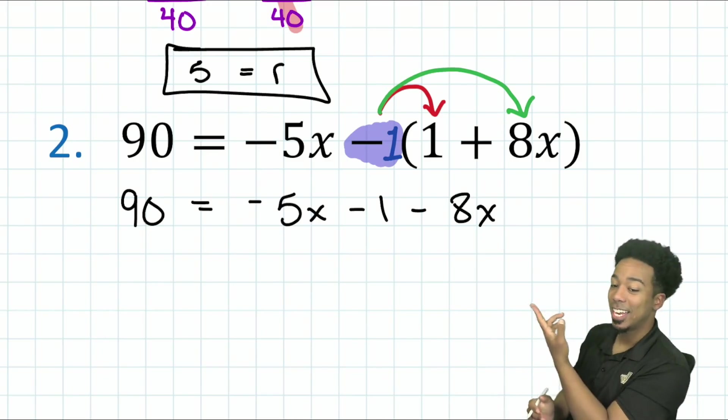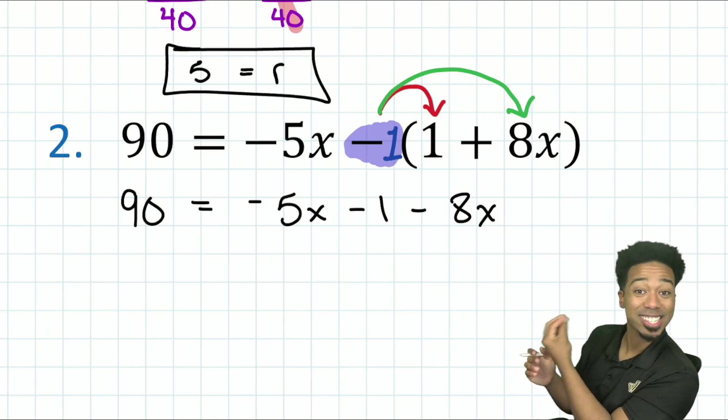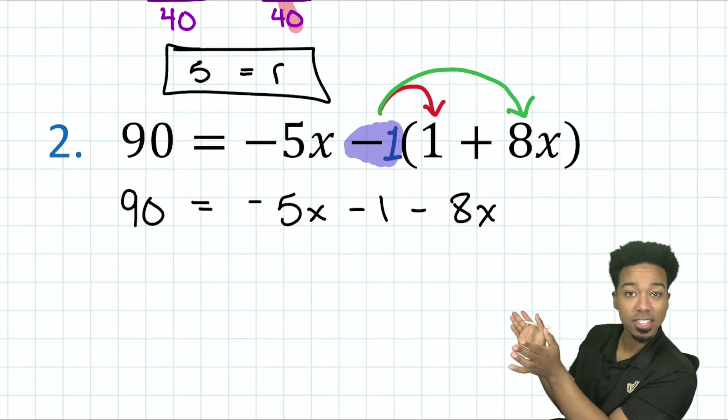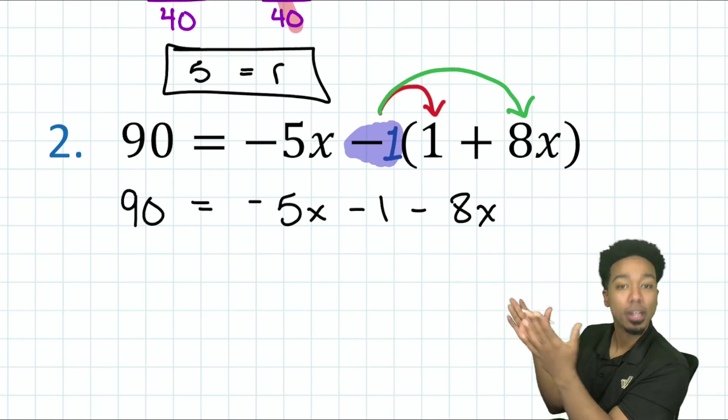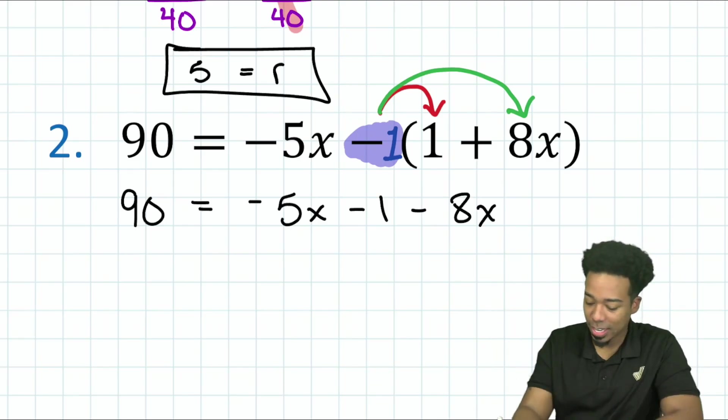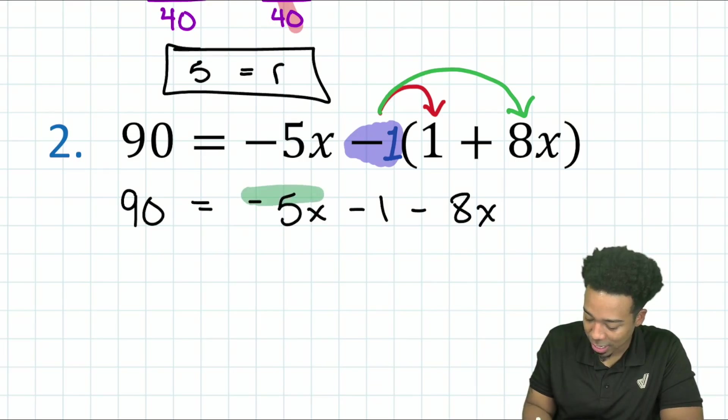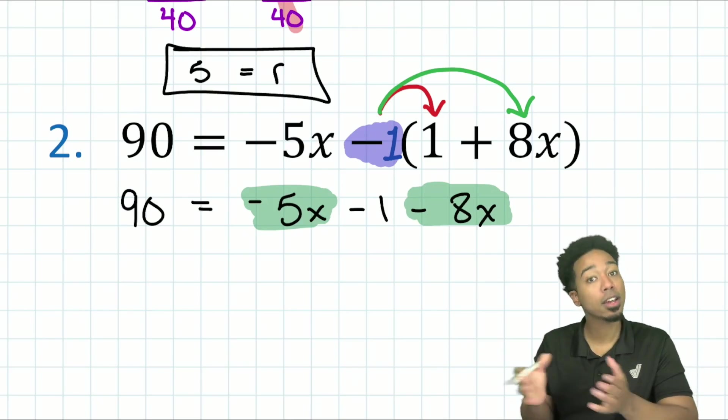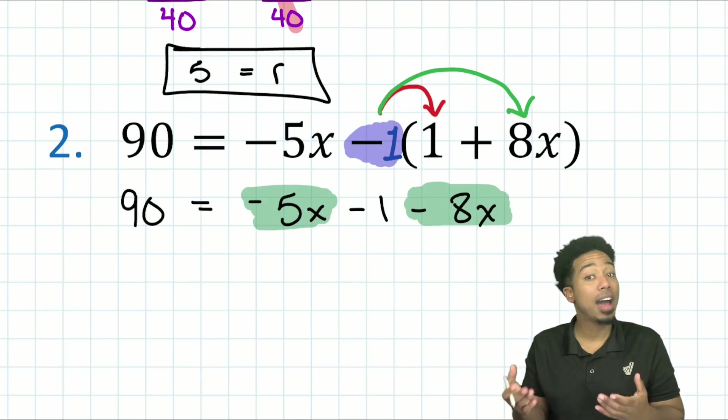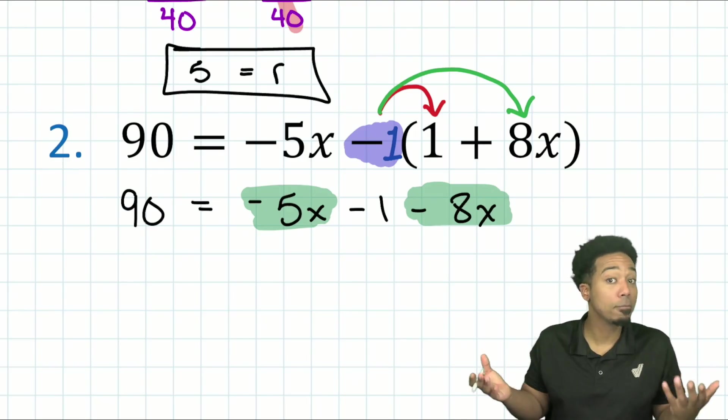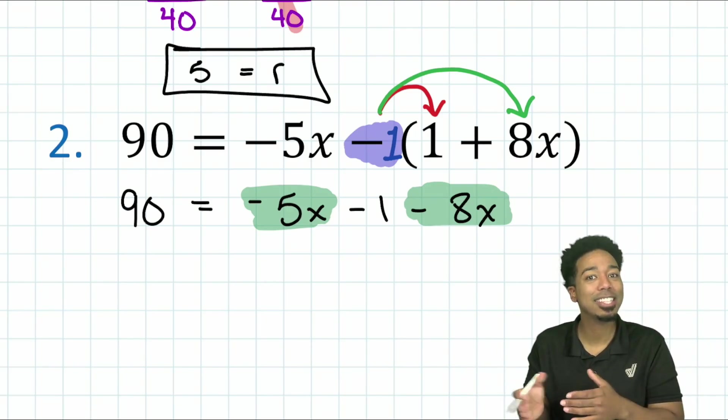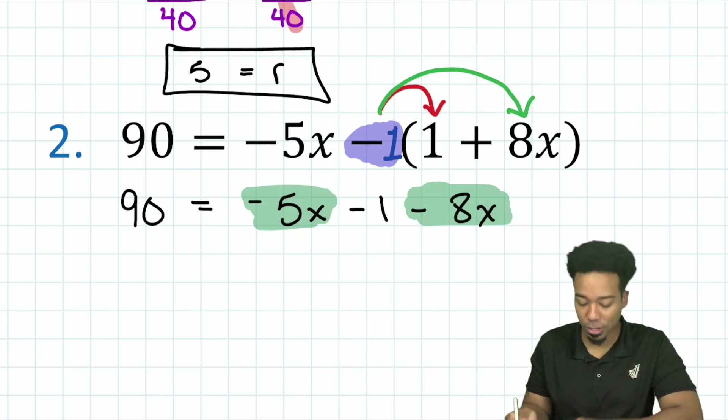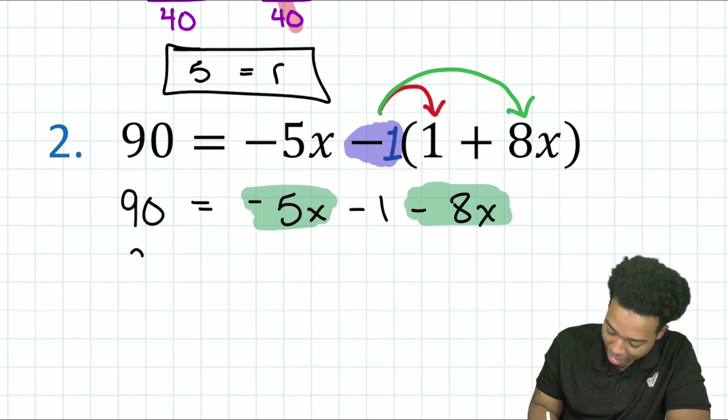Now I'm going to take a second look again. And I see that I have variables on the same side, no parentheses in between them now. So now I can combine these like terms. Combining these like terms, what it looks like is a negative 5x and a negative 8x coming together. Negative 5 minus 8, that's the same thing as 5 plus 8. Just keep it negative. So 5 plus 8, that's going to be 13. Negative 13x is what we have. So we have negative 13x minus 1.